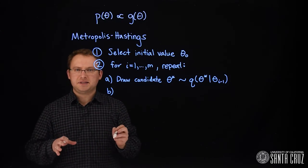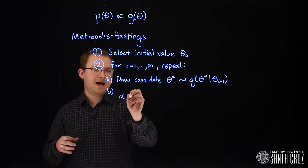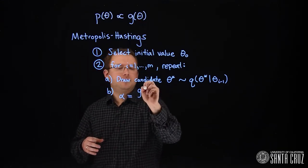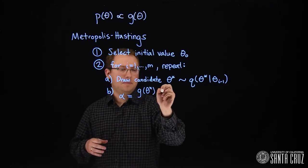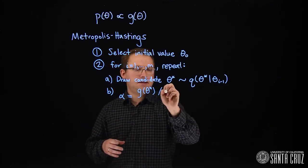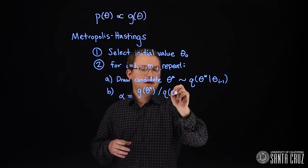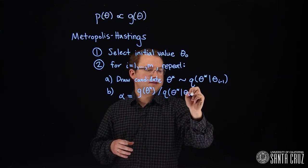The next step is to compute the following ratio. We're going to call this alpha. It is this g function evaluated at the candidate divided by the distribution or the density here of q evaluated at the candidate given the previous iteration.